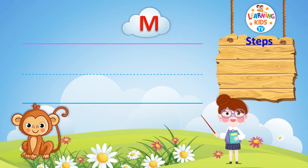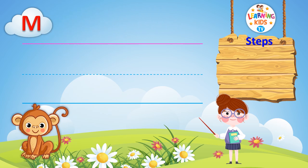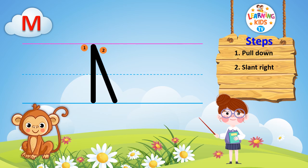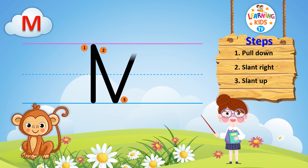Learn to write uppercase letter M. Step 1: pull down. Step 2: slant right. Step 3: slant up. Step 4: pull down.